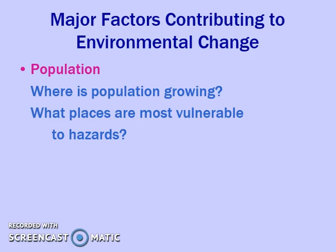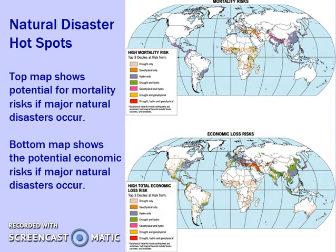In terms of contributing to environmental change, population is the biggest factor. When we talk about natural disasters, it's important to look at the discrepancy between core and peripheral countries. Peripheral countries see not just economic loss — they lose their homes, businesses, and land — but also higher mortality. People die in greater numbers because peripheral countries often don't have adequate housing to withstand earthquakes or tsunamis. In core countries, there's mainly economic loss with few deaths, whereas in poor countries, there is both the mortality and the economic loss.